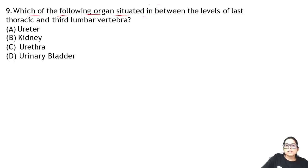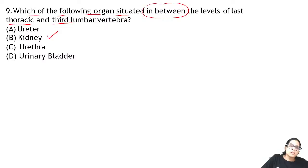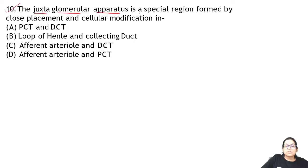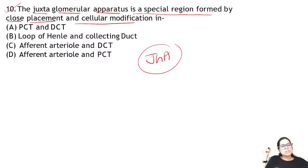Zoology Question 9: which organ is situated between the level of the last thoracic and third lumbar vertebra? It is the kidney. Question 10: the juxtaglomerular apparatus is a special region formed by the close placement of the efferent arteriole and the DCT. This is an important exam question — if you do not know it, learn it.